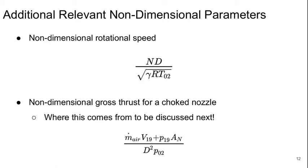There's a couple other really important non-dimensional parameters. We have a non-dimensional rotational speed. This is if N is the rotational speed of the shafts and D over square root of gamma R T0.2. Why does that look like that? That has to do with maintaining speeds of sound, or sorry, maintaining Mach numbers.